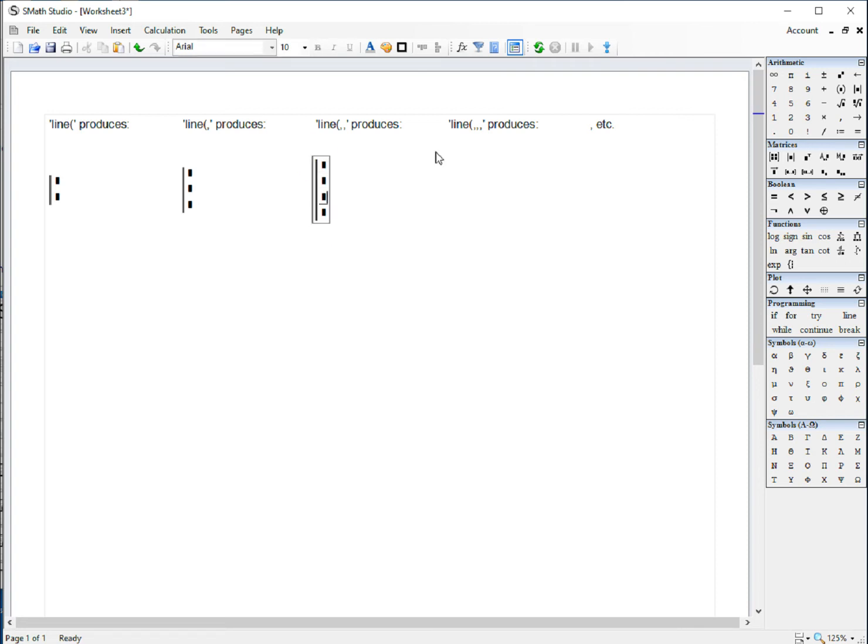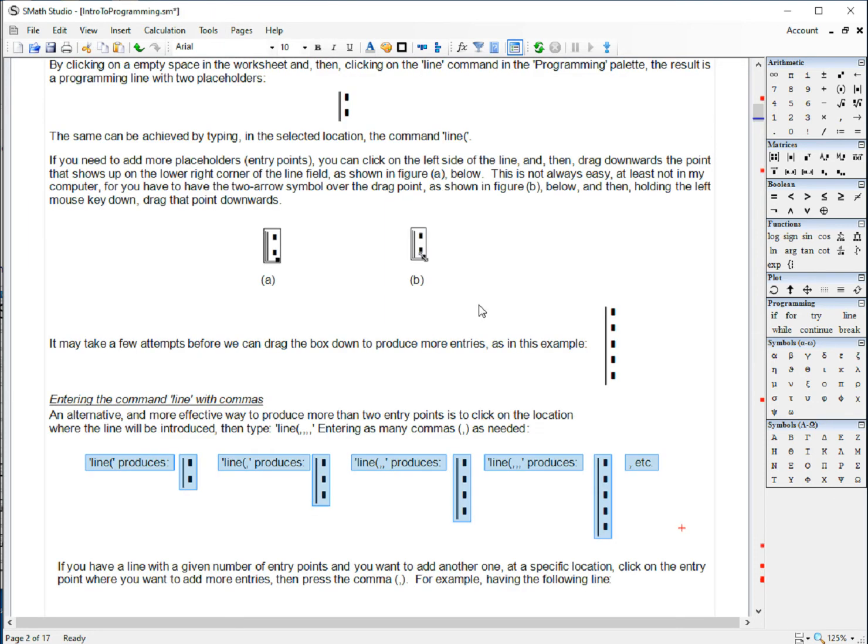And so on. Here I'm going to show you: if you use three commas, you get five points. So this is an easier way to produce lines with many entry points. Now, let's go back to the examples here.